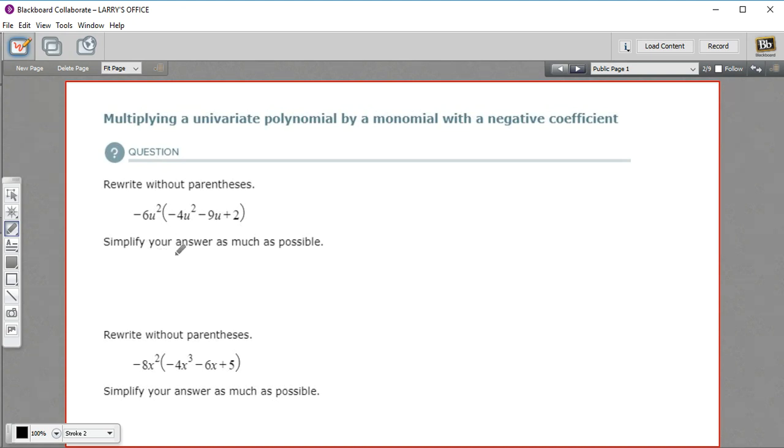Really, this is just a problem about distribution. When two things are next to each other, one of them is in parentheses, we're multiplying. Since this has got three terms inside, we have to multiply this by each of these three terms. And the only tricky part here is that we've got some negative signs to watch out for.